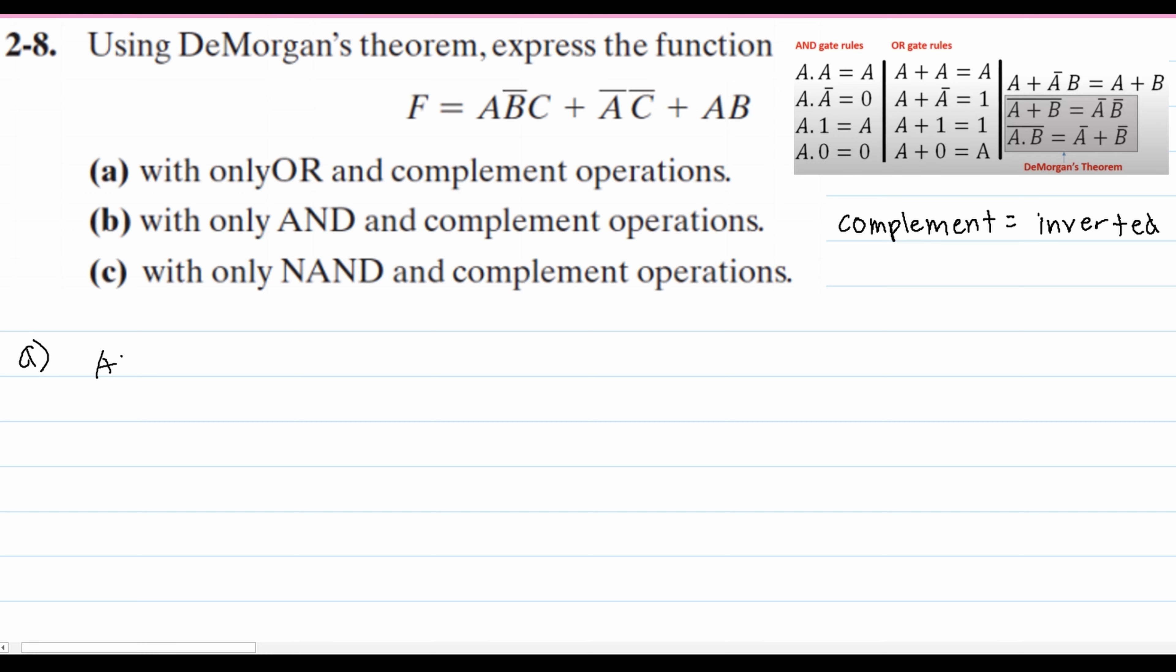Starting off part a, we have A times B' times C. Now we need to invert this, so we're going to have A' times B times C'.